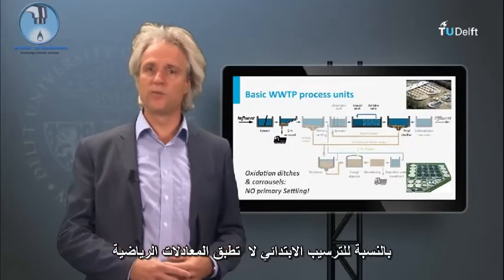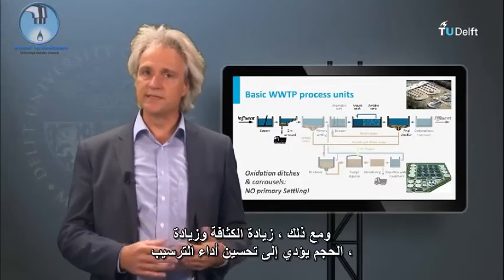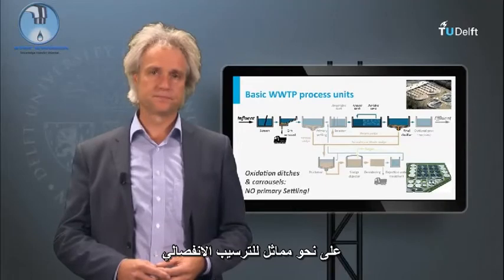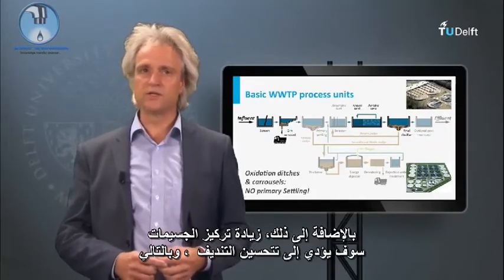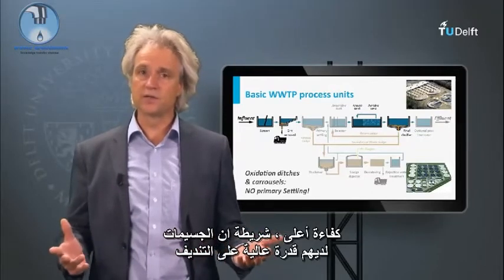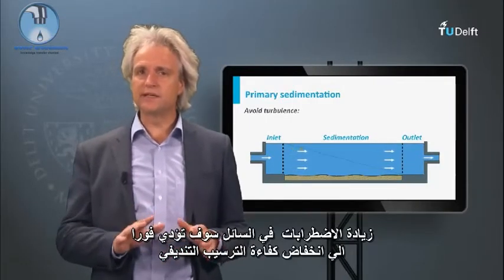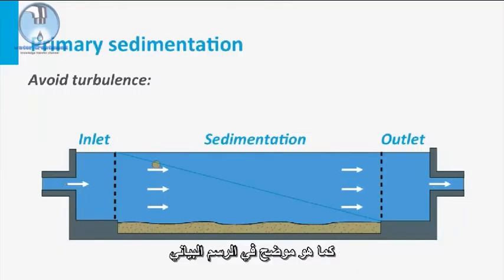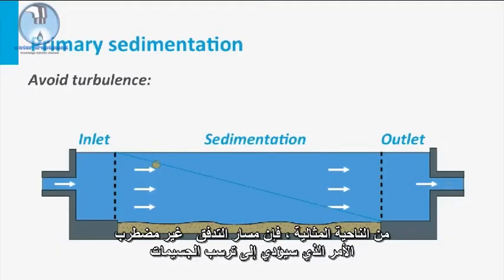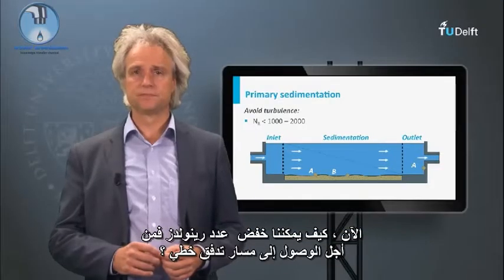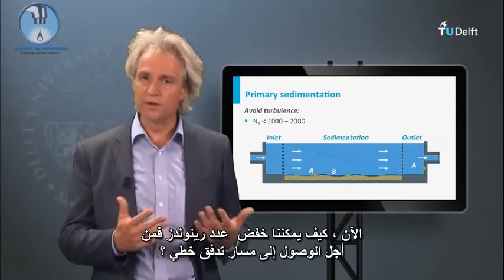For primary settling, no mathematical formulas apply. However, increasing density and increasing size will lead to improved settling performance, similarly to discrete settling. In addition, increased particle concentration will lead to enhanced flocculation and thus higher efficiency, provided the particles have a high ability to flocculate. Increase in liquid turbulence will immediately decrease the efficiency of flocculent settling, as illustrated in the graph. Ideally, the flow regime is non-turbulent, which will lead to settling of the particles according to settling path B, whereas turbulence may cause drastic deviations as indicated by settling path A. How can we reduce the Reynolds number in order to reach a more laminar flow regime?